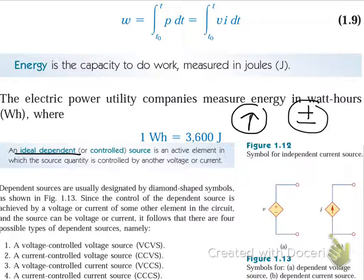Dependent sources will cover them in the next few chapters. Because right now they're just giving you an introduction. There are four types of dependent sources. There's a voltage controlled voltage source, a current controlled voltage source, a voltage controlled current source, and a current controlled current source.